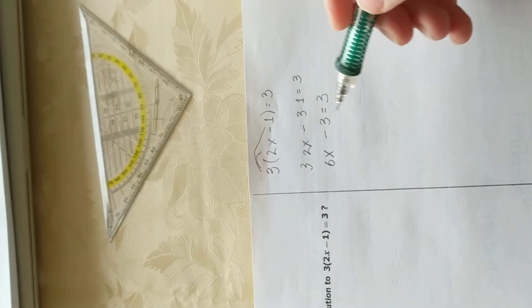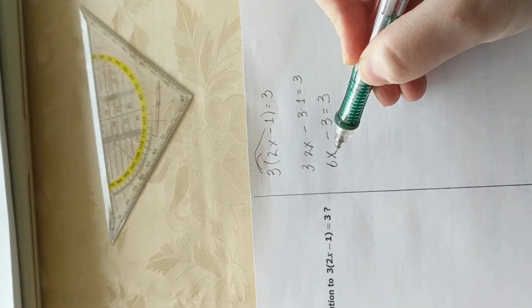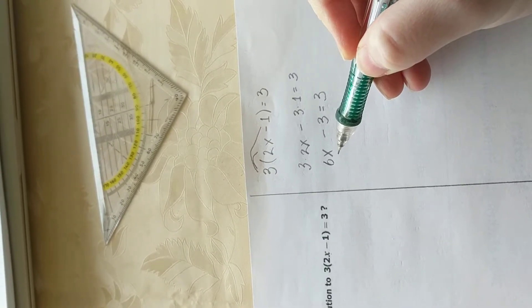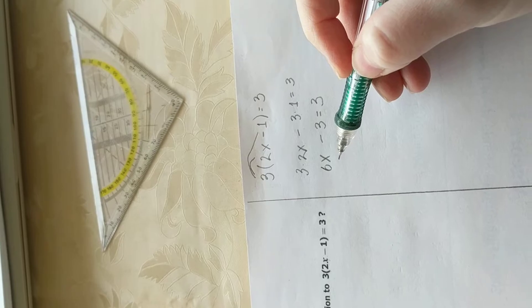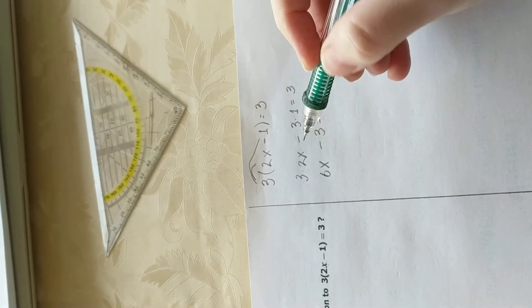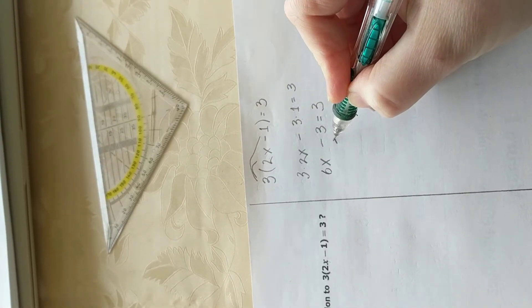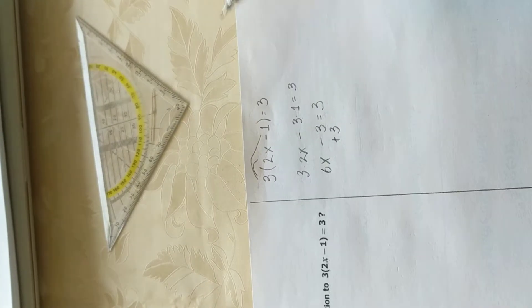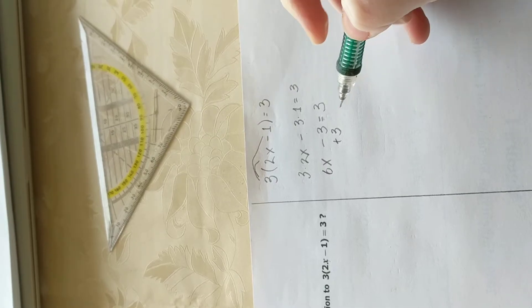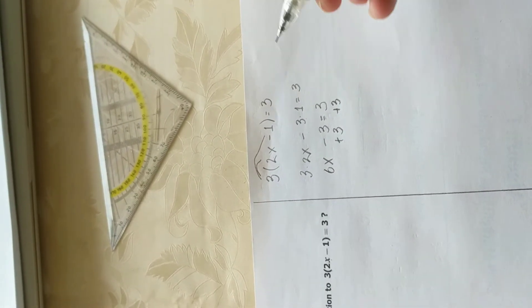Well, 6x minus 3 is equal to 3 does not mean that x is by itself yet. We don't know what the value of x is. We could guess, but that's not very obvious in most problems. Therefore, let's solve for x. In order to do so, we have to get rid of all the surrounding elements first. Since we have a minus three here, the opposite operation would be plus. And because it's an equality, we need to do every operation on each side of the equal sign. Therefore, we are adding three to both sides of the equation.